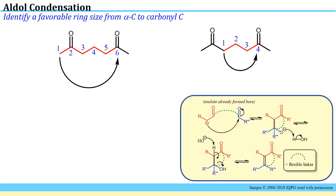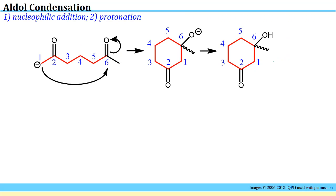If you're going to form a ring, you want to make sure you're forming a non-strained ring preferentially. In this case, we have two possibilities. Using the alpha position at one end, when it attacks the other carbonyl, you would make a cyclic structure with six atoms in it — a six-membered ring, which is very favorable. If we instead use the alpha carbon at the interior part of the molecule, you would have to make a four-membered ring, which is pretty strained. So we rule that out and have identified the correct nucleophilic site.